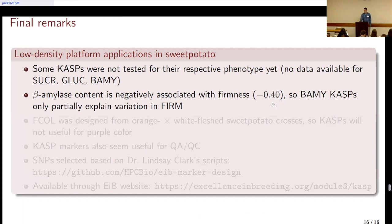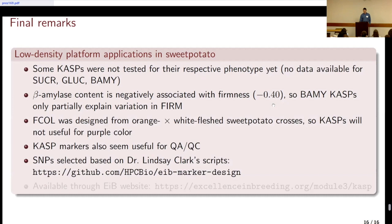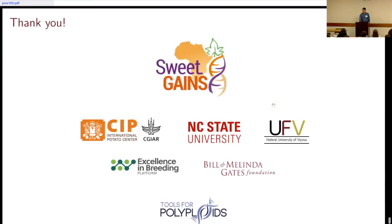Beta-amylase content is negatively associated with firmness, so we can only partially explain firmness variation using the CAST markers for beta-amylase. The flesh color markers were designed for orange-by-white-fleshed sweet potatoes, so they are limited to that range of variation. The CAST markers also seem useful for QA and QC. We have 120 total markers tested. The design was based on Lindsay Clark's script, which is publicly available, and the QA/QC marker set is also available on the Excellence in Breeding website — some people are already using it, which is great.